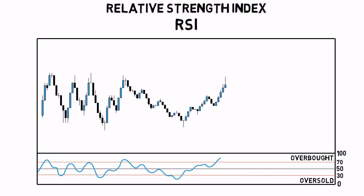There are two main ways to use the RSI. The first one is to trade the overbought and oversold regions. That is, you buy when the RSI is rising back above the 30 level and you sell when it's falling below the 70 level.